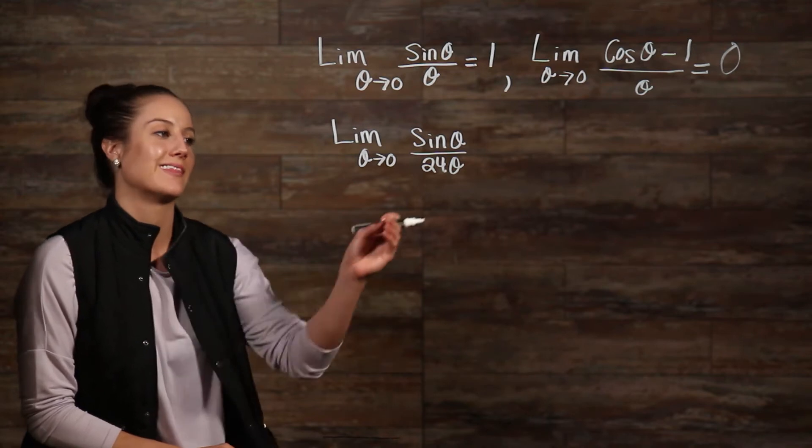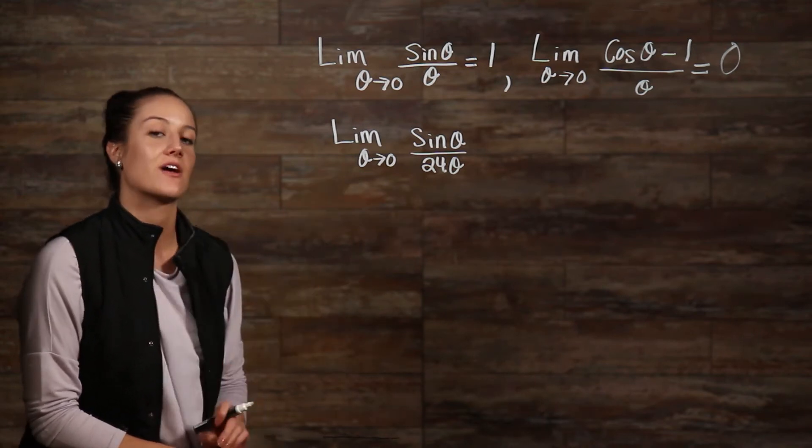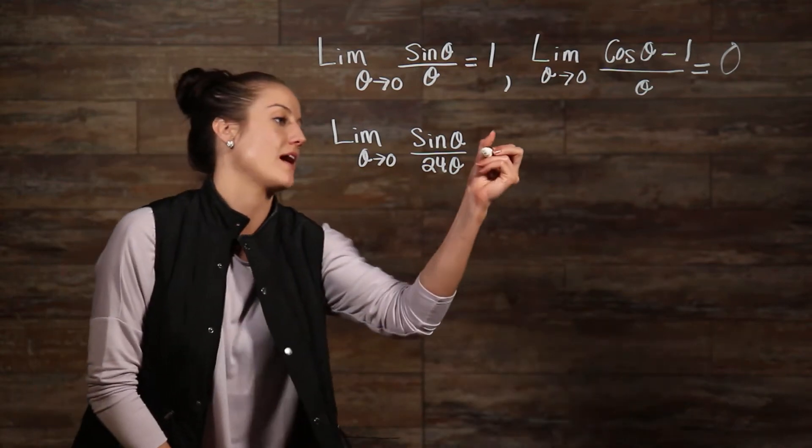So, we know that one of our limit rules allows us to move this constant out here in front and then evaluate. So then we have...